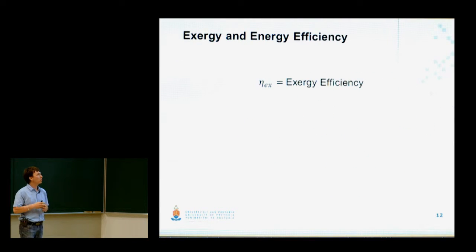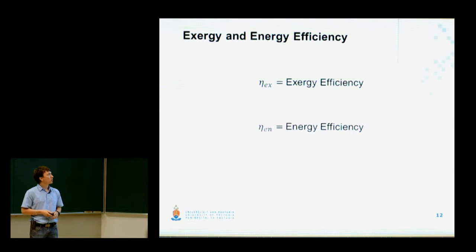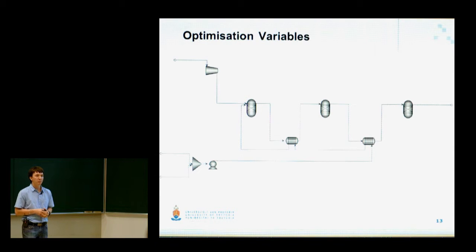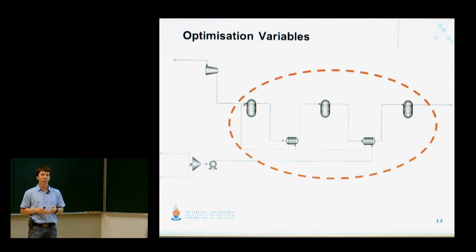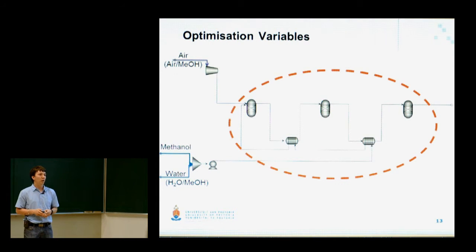Okay, moving on, for optimization one needs an objective function. The two objective functions that I used, as I mentioned previously, were the exergy and energy efficiency. Before the start of my investigation, I decided to draw the following system boundaries around my process. Outside these system boundaries, three variables for optimization were identified. The first is the water methanol feed ratio, the second is the air methanol feed ratio, and thirdly we have the overall system pressure.